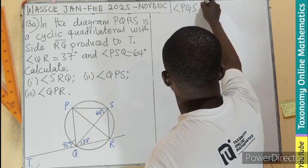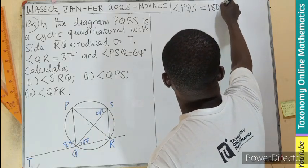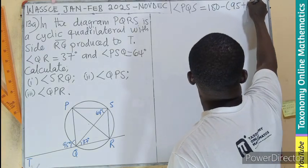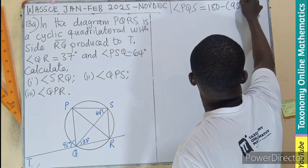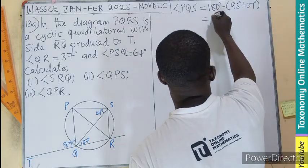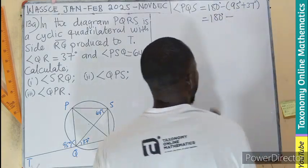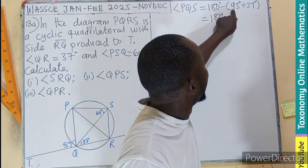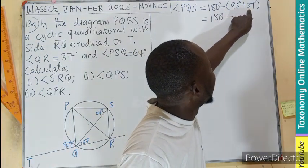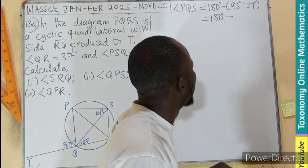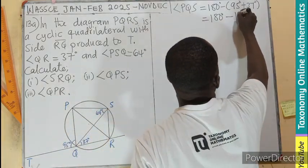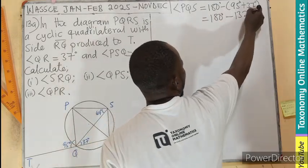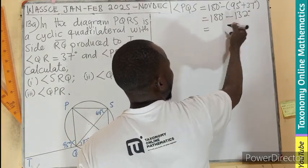Since these are angles on a straight line, let's find angle PQS. This angle should equal 180° minus the sum of 95° plus 37°. This gives us 180° minus 132°, which equals 48°.